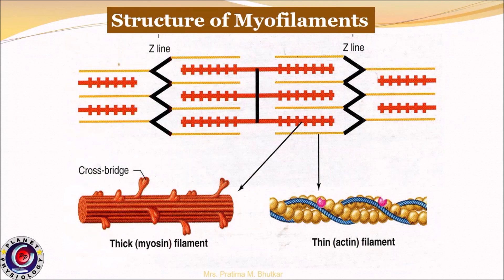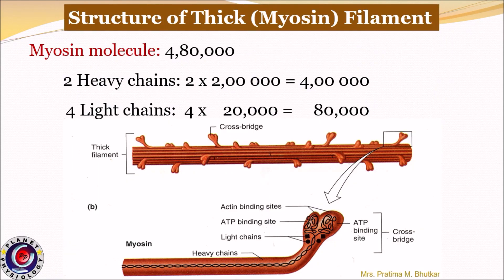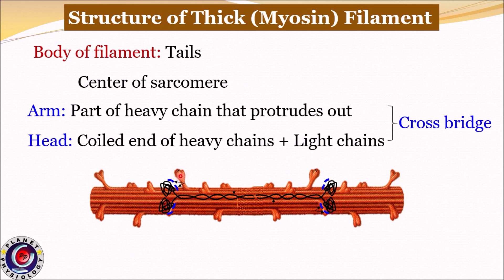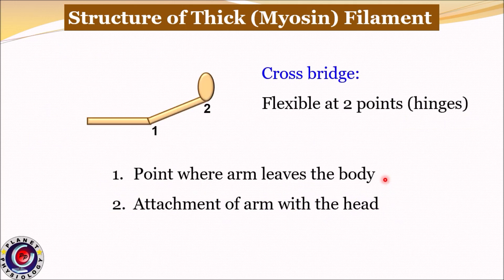Now we shall study in detail the structure of myofilaments, starting with the thick filaments. Each myosin filament is made up of myosin molecules. The myosin molecule is a protein made up of two heavy chains and four light chains. The molecular weight of each heavy chain is 200,000 and that of each light chain is 20,000, giving a total molecular weight of myosin of 480,000. The heavy chains are spirally wrapped around each other, and one end is folded to form the globular head of the myosin molecule. Two light chains are associated with each myosin head. The tails of myosin molecules are bundled together to form the body of the myosin filament, whereas the heads hang outward from the body via an arm. These arms and heads form the cross bridges. Each cross bridge is flexible at two points called hinges.